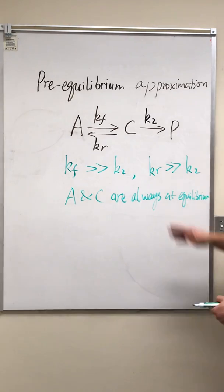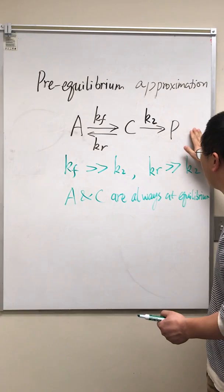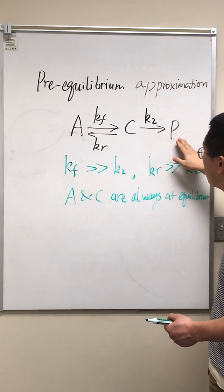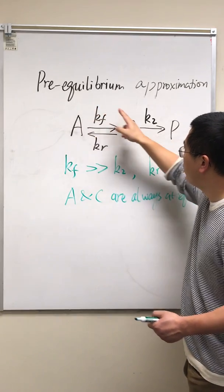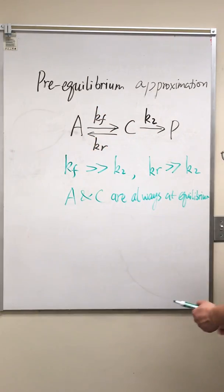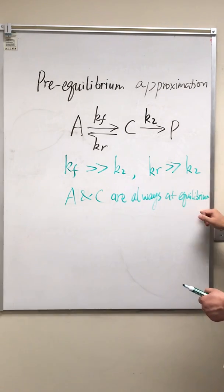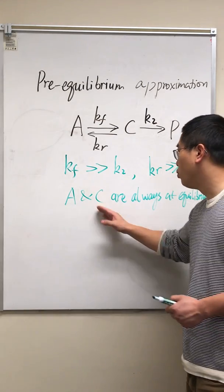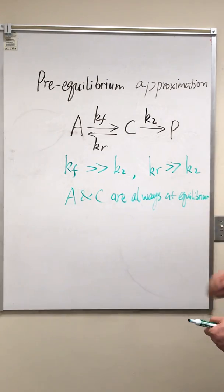It is true that C is constantly converted to P, but because this rate is so much smaller than the reaction rates between A and C, even if the equilibrium is slightly disturbed, A and C will reach equilibrium again quickly.